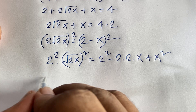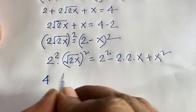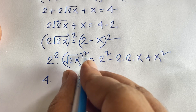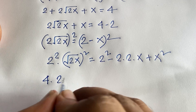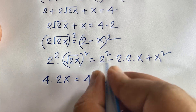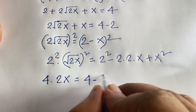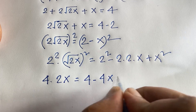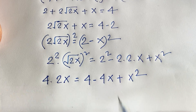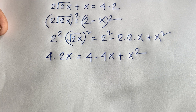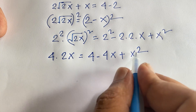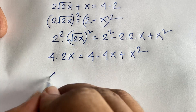After squaring, on the left side the square root cancels and we get 4 times 2x, which is 8x. On the right side, using (2 − x)², we get 4 minus 4x plus x squared. So 2 squared is 4 and 2 times 2 times x is 4x.